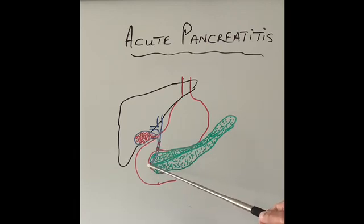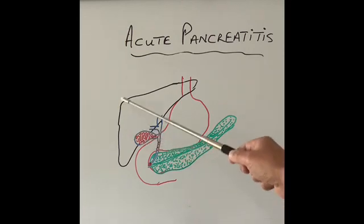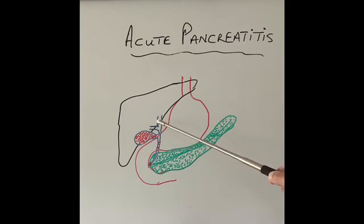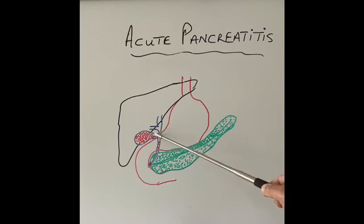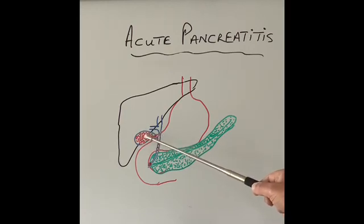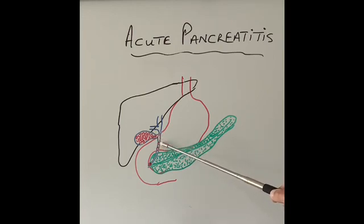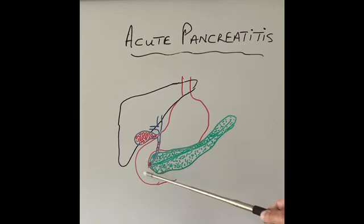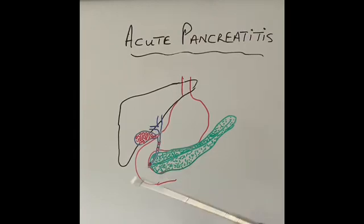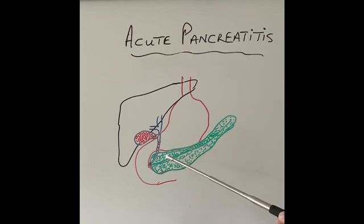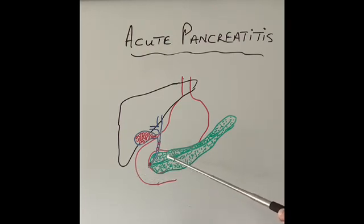Right where the pancreatic duct opens, another duct also opens — that duct comes from the gallbladder. The liver produces two hepatic ducts that join into one, and from the side comes the gallbladder, which contains gallstones. If these stones are very small, they can fall into the bile duct and travel down, blocking the bottom end of the bile duct and in doing so also blocking the pancreatic duct. This blockage — even for a few minutes or hours — is enough to activate the enzymes coming from the pancreas, causing them to start attacking and digesting the pancreas itself.